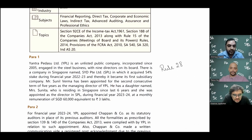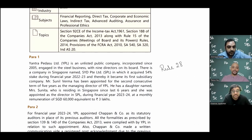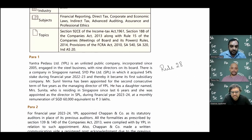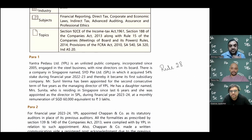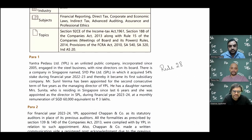Mr. Sunil Verma, the MD of the holding company, has a daughter named Mrs. Sunita, who has been residing in Singapore for the last six years. She was appointed as director in SPL during financial year 2023-24 at a monthly remuneration of Singapore Dollar 60,000, equivalent to three lakh rupees per month. Under Section 2(76) of the Companies Act, any director or their relative is a related party, and a holding-subsidiary company is also a related party.